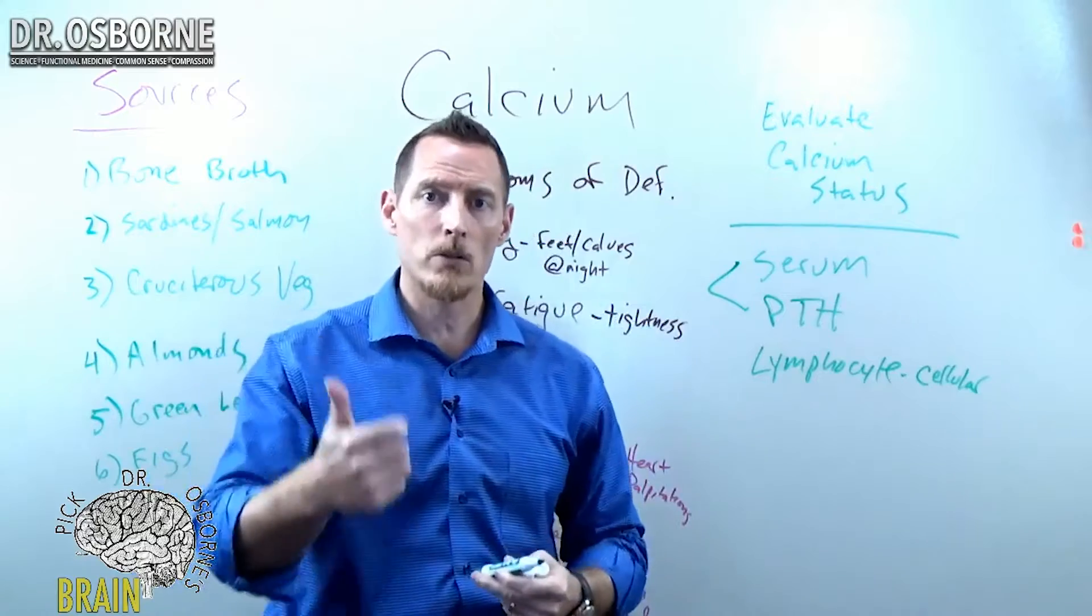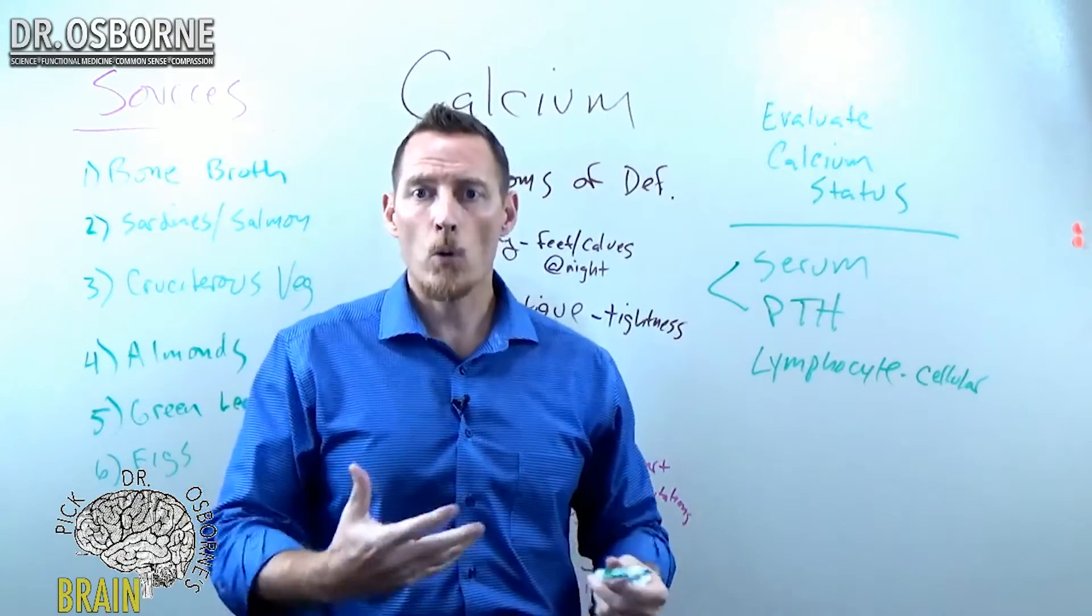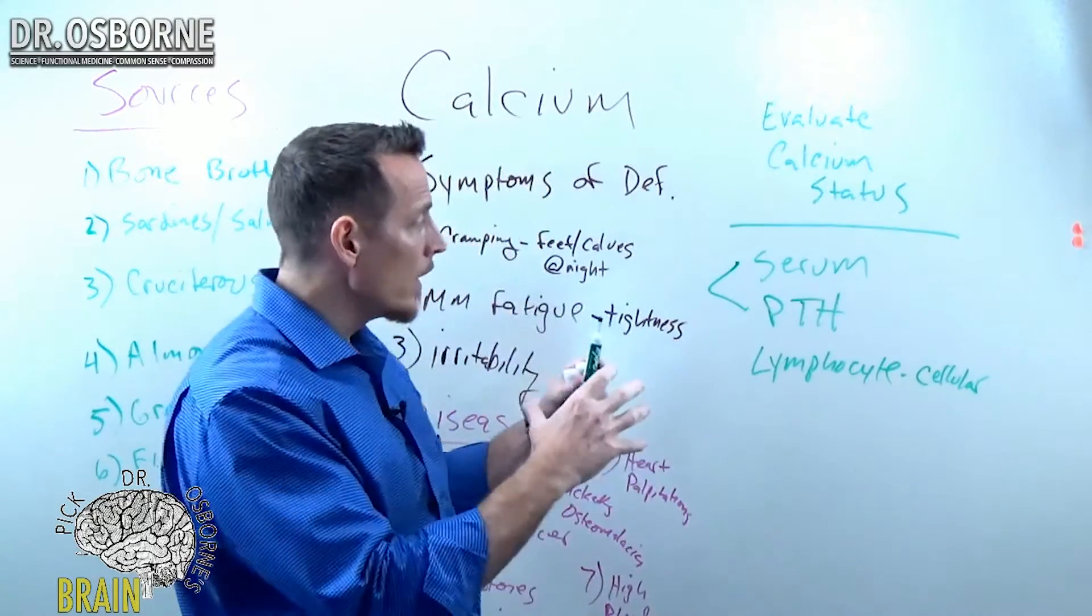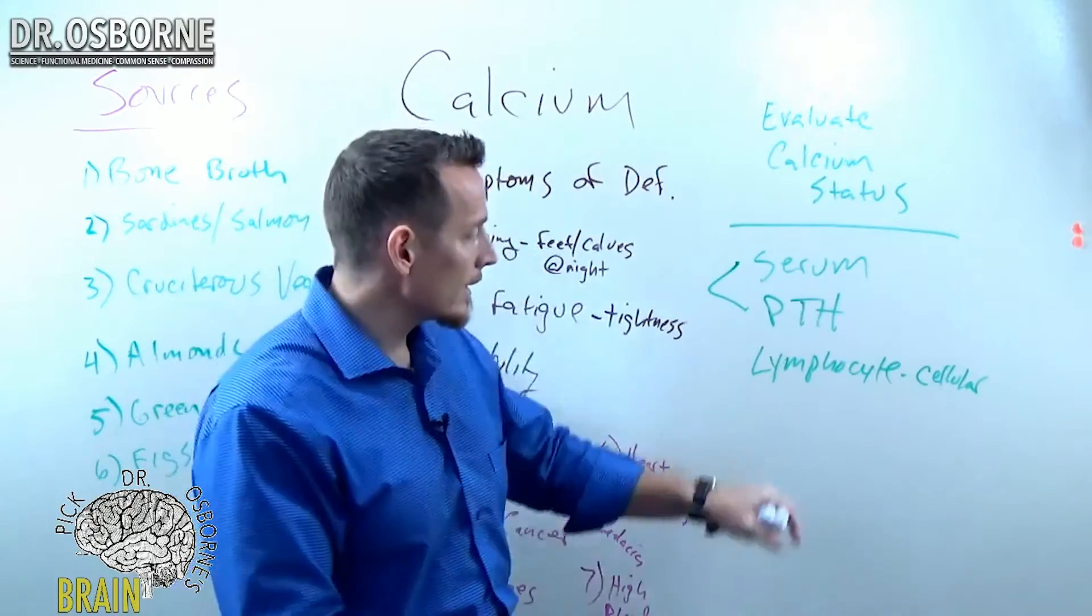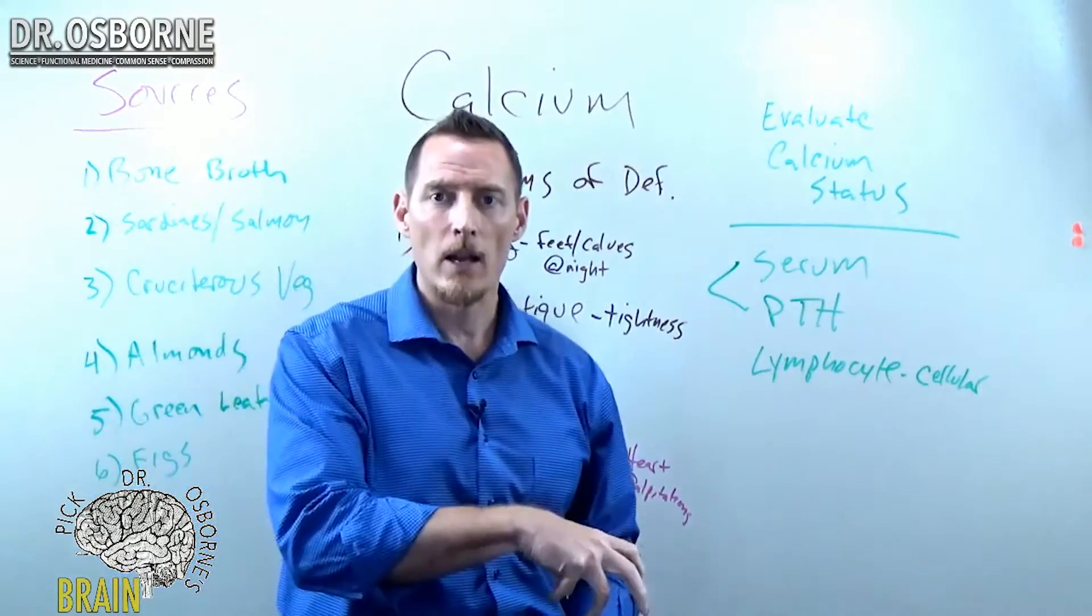So we also know that intracellularly speaking, calcium regulates muscle tonicity and muscle tone. So remember muscle. Your heart's a muscle. Your blood vessels are muscles. Your gut, your GI tract is a muscle. Of course, you have skeletal muscles that move your body around.